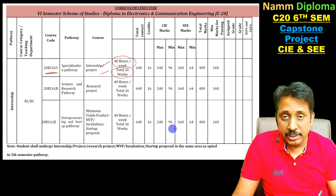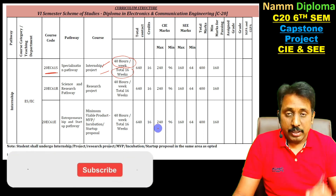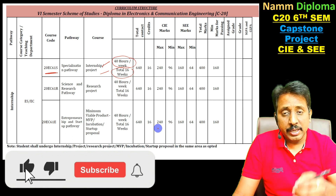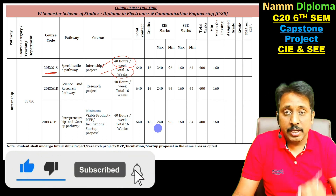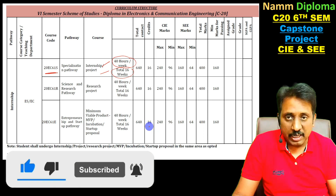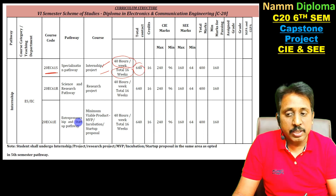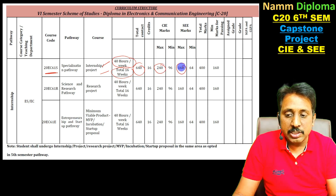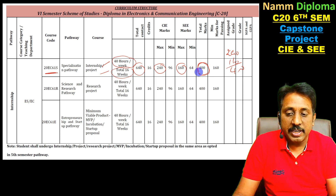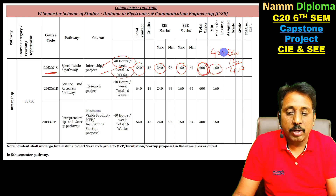So the capstone project — clearly CAE and SWE — and other details of the score. Total contact hours are 640 hours. CAE marks are 240 marks, SWE marks are 160 marks. So 240 plus 160 gives a total of 400 marks.